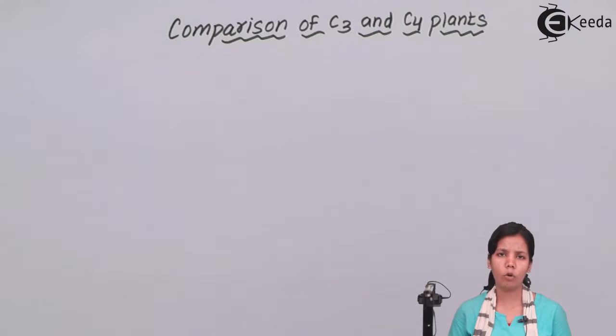C3 plants have a chloroplast which is granal in nature. The grana part of the chloroplast is present - thylakoid, grana, stroma, all are present basically. Whereas in C4 plants the granal part of the chloroplast is present along with an agranal part or you can say perforated part.